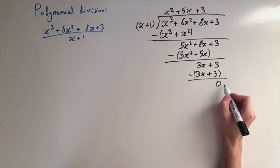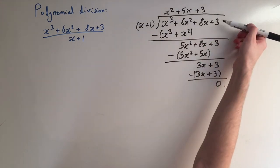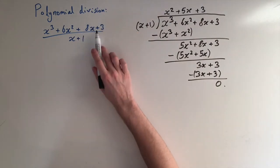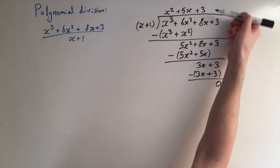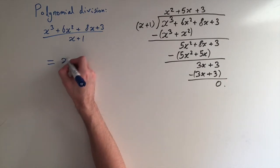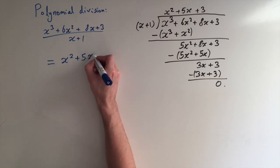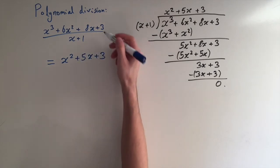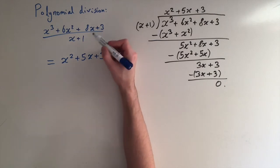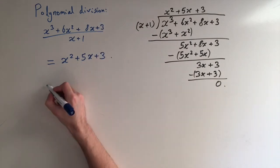Since we have a zero remainder, this tells us that x plus 1 divides perfectly into this cubic. In fact, this fraction is going to be equal to exactly our answer up here. It tells us that this ratio of these two polynomials equals this quadratic: x squared plus 5x plus 3. That's how to divide two polynomials, and we can think about this slightly differently — if we multiply up the x plus 1 on the bottom, it tells us a way to factorize this cubic.